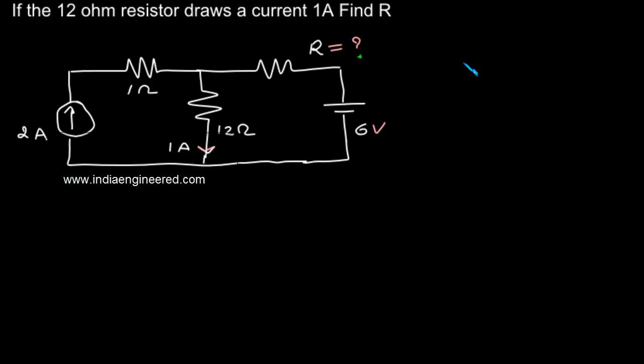The question is, if the 12 ohm resistor draws a current of 1 ampere, find the value of resistance R. We are asked to find out the value of this resistor R.